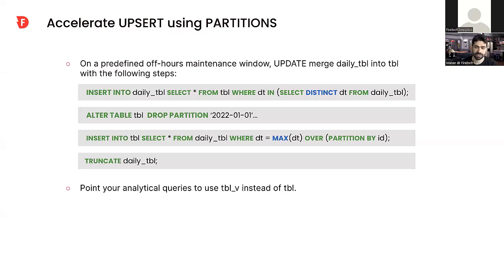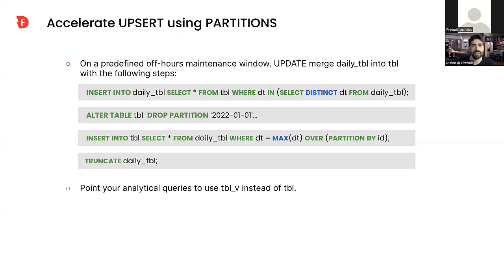Based on some predefined maintenance window in the off hours, we do a flip-flop between the two tables — inserting the most updated records from the daily table into the permanent table, then truncating the daily object. Now we have an updated permanent table with only the most recent records for each ID, the daily table is empty, and we're ready to start the cycle again. All our analytical queries should point to the view instead of the table itself. I'd encourage exploring this technique in cases where upserts are a bottleneck for performance or cost.